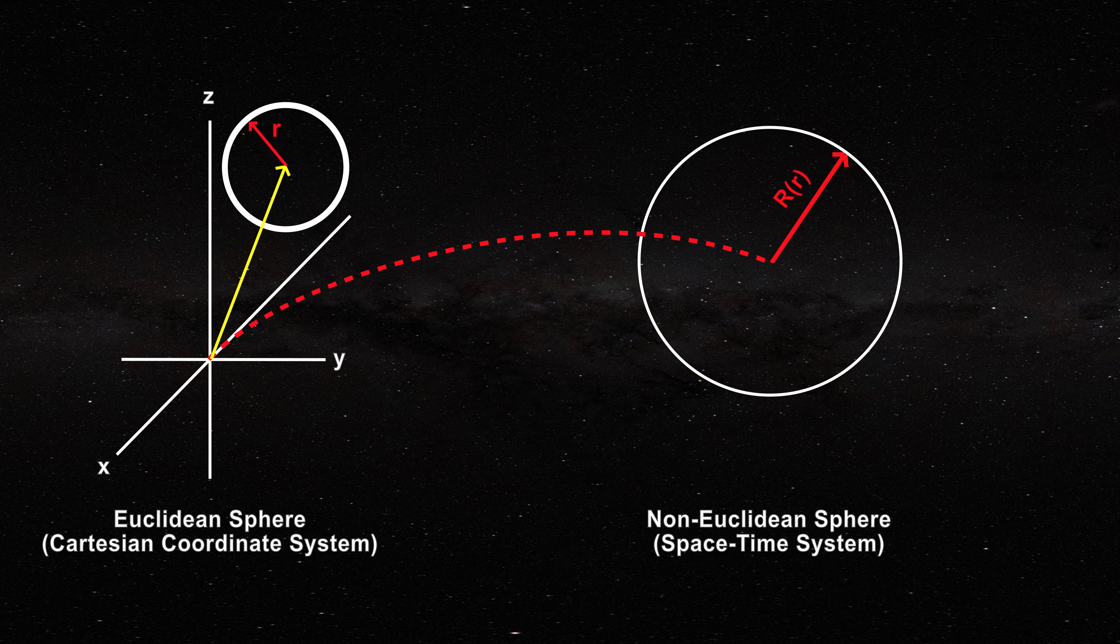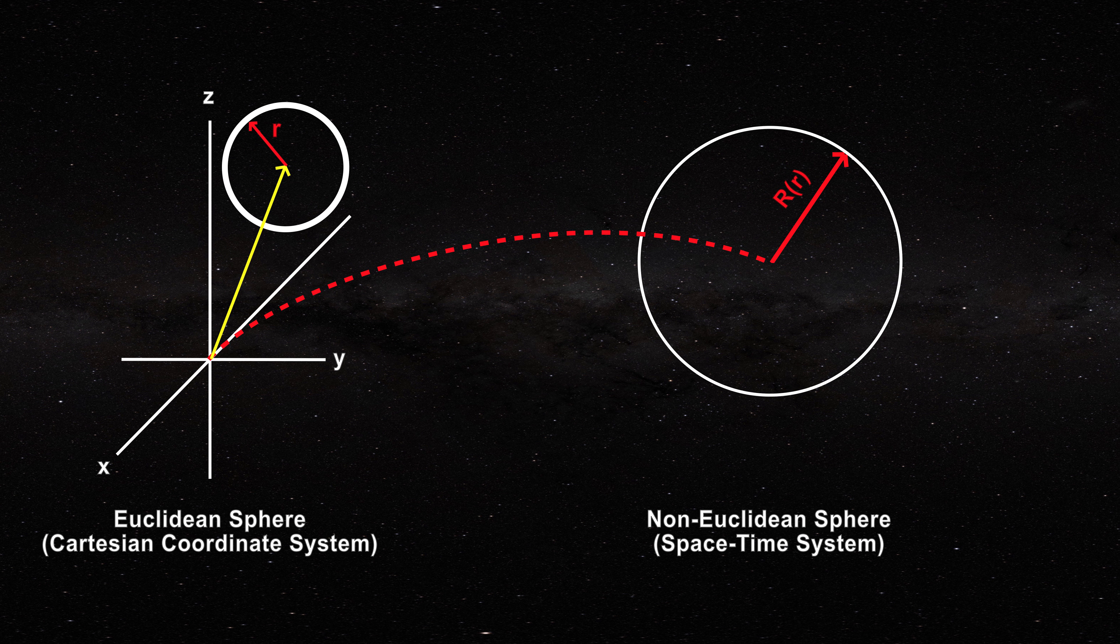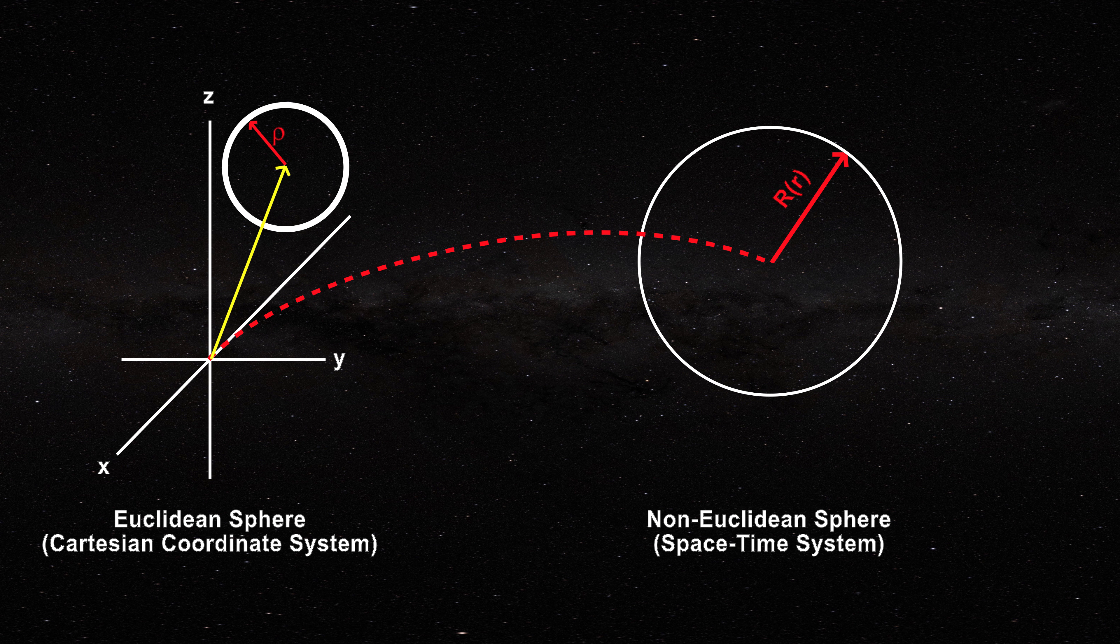However, cosmologists think that the center of the sphere has remained at the origin. If we denote the radius of the Euclidean sphere by rho, the situation is shown in this figure.